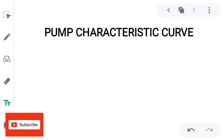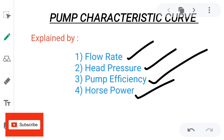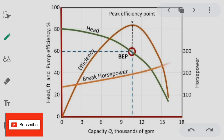Today we are going to discuss about pump characteristic curves. Basically, it clearly explains the basic behavior and performance of the pump under different conditions. This pump characteristic curve is explained by different parameters like flow rate, head pressure, pump efficiency, and horsepower. These are the parameters we are going to use to explain the pump characteristic curve in an easy and effective way.